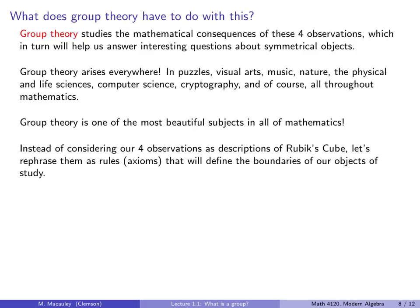So instead of considering our four observations as descriptions of the Rubik's Cube, which is what we did, what we will do soon, in the next slide, is we will actually rephrase those observations as rules, which we call axioms, and that will define the boundaries of the objects of study, in other words, groups.